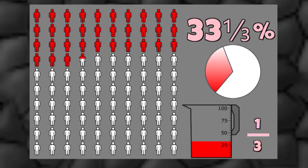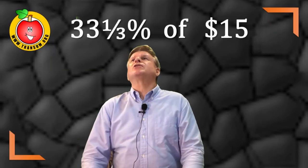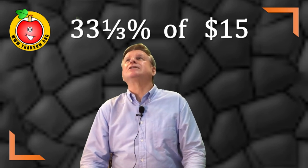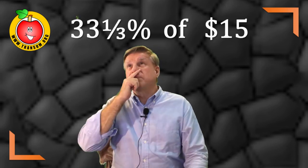Now one that's always a bit peculiar is what is a third as a percentage? Well threes don't divide exactly into a hundred. So that's why this percentage is a bit peculiar. It's 33 and a third percent. That represents the fraction one third. So to find 33 and a third percent of something you divide it by three. So for example 33 and a third percent of 15 dollars. Divide it by three. Five dollars.